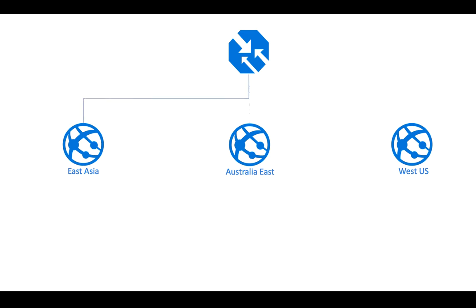Let's go into today's topic: nested Traffic Manager profiles. Before we do that, I'd like you to think about a scenario. Let's say you have an application or website with clients in East Asia, clients in Australia East, and clients in West US. In this scenario you'd want to deploy your app services across the world leveraging Azure Traffic Manager — one app service in East Asia, one in Australia East, and another in West US, all as endpoints under one Traffic Manager profile.